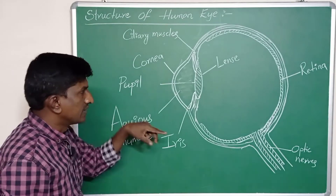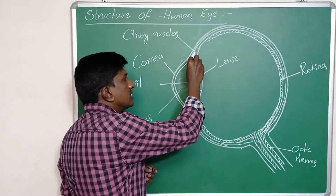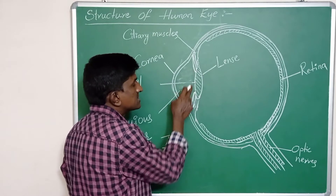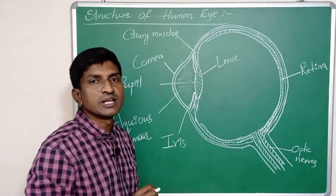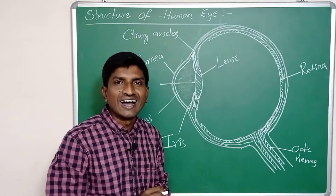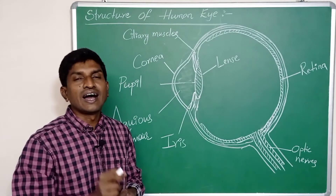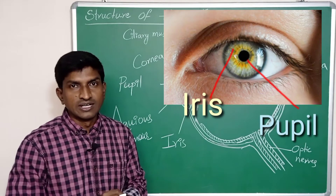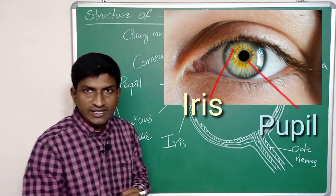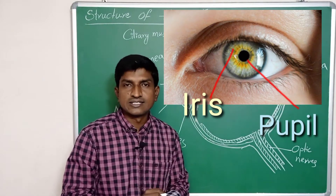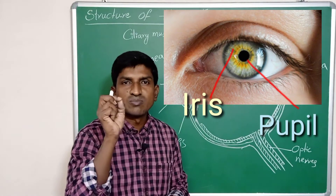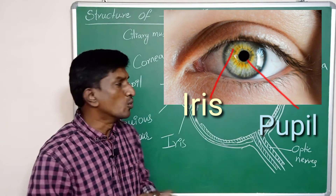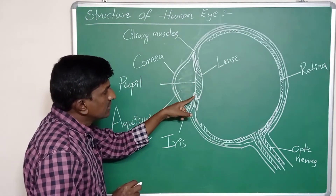After that we can observe a muscular membrane is present; this muscular membrane is called the iris. The iris has a small hole in between — the colored part of the eye is the iris. The small hole present in the iris is called the pupil.